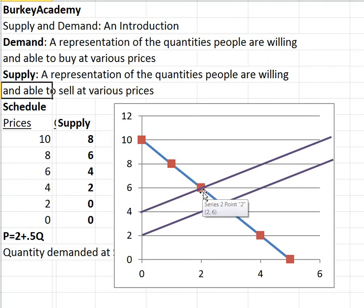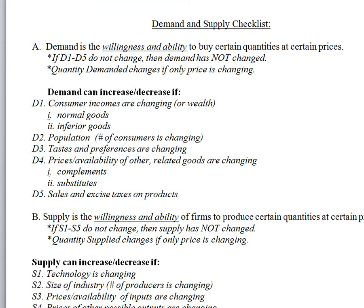Now let's look at a checklist of things that can decrease demand and supply. Here's a checklist I like to go through in my classes listing the main things we think about when talking about increasing or decreasing demand. To review: demand is the willingness and ability to buy various quantities at various prices. If one of these five things changes, it increases or decreases your willingness and ability to buy — it shifts the whole curve. One thing we talked about is income or wealth changing.